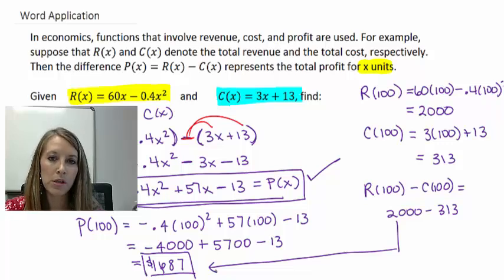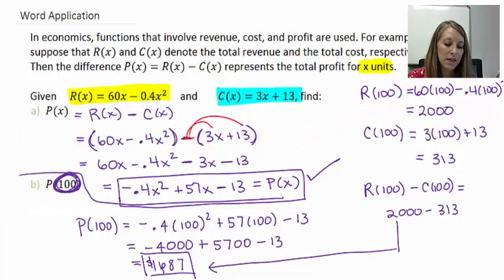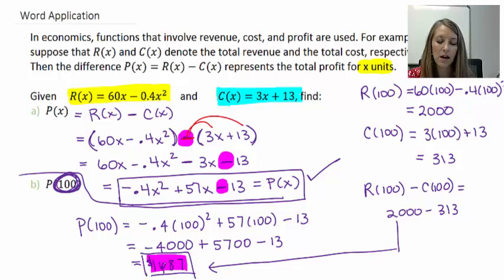But I do want to point out the most frequently missed mistake here because I see it quite often. This is revenue minus cost. So, we want to make sure that we distribute this negative here, which means we would have a negative 13 here, which would give me this value here. And that is, again, what the biggest mistake is of this problem.